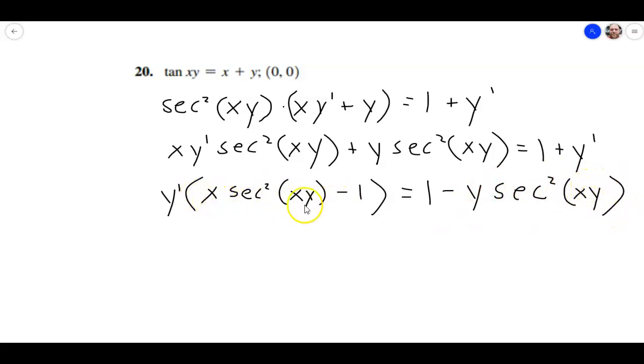And then I'm just going to divide both sides by this, so I'm going to end up getting y prime is equal to 1 minus y secant squared of xy, and this is going to be divided by this term here, so that's x secant squared of xy minus 1. And I think that's about all we can do for right now.